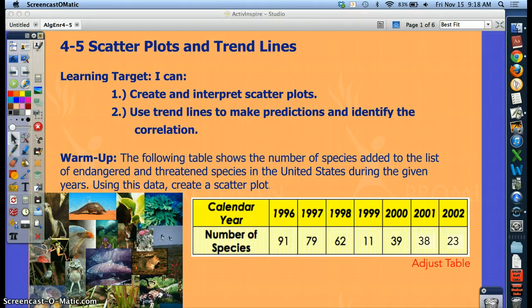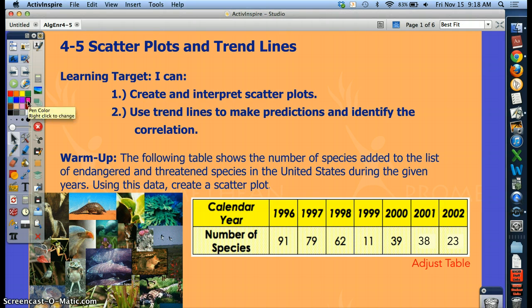So copy down your target and for the warm up I want you to graph the number of species added to the list of endangered and threatened species in the United States over the years in the past. I did adjust the table a little bit so if you could change the value for 2001 to say 38 and for 2002 to say 23 that would be great. So go ahead and make those changes, copy down your target and we'll graph this together. Or you can graph it and then compare it to mine but make those changes first. Go ahead and pause.